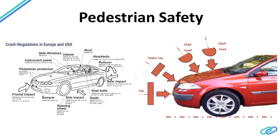The diagram clearly shows how the leg and head impacts work: the lower leg contacts the bumper, the upper leg contacts the bonnet-bumper interface edge, the child head impactor targets the bonnet, and the adult head impactor targets the upper bonnet edge and lower windscreen. On the left side, examples of crash regulations in Europe and the USA are given, covering side windows, roof, headrest regulations for both occupants and pedestrians.